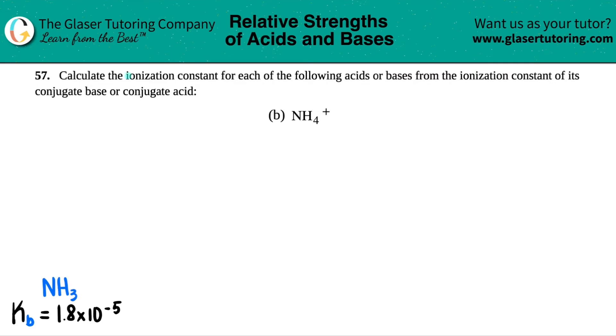Number 57. Calculate the ionization constant for each of the following acids or bases from the ionization constant of its conjugate base or conjugate acid. Then we have letter B.